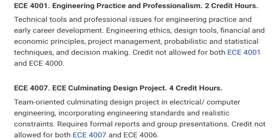Before you took 4007, you had to take this thing called ECE 4001 — Engineering Practice and Professionalism: Technical Tools and Professional Issues for Engineering Practice and Early Career Development. It covered engineering ethics, design tools, financial and economic principles, project management, and probabilistic and statistical techniques and decision-making.